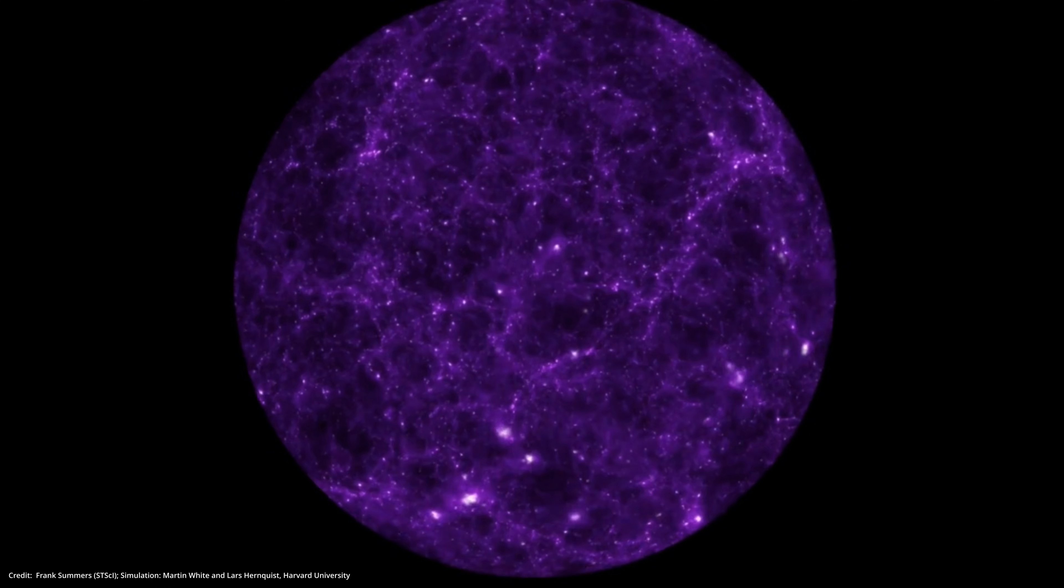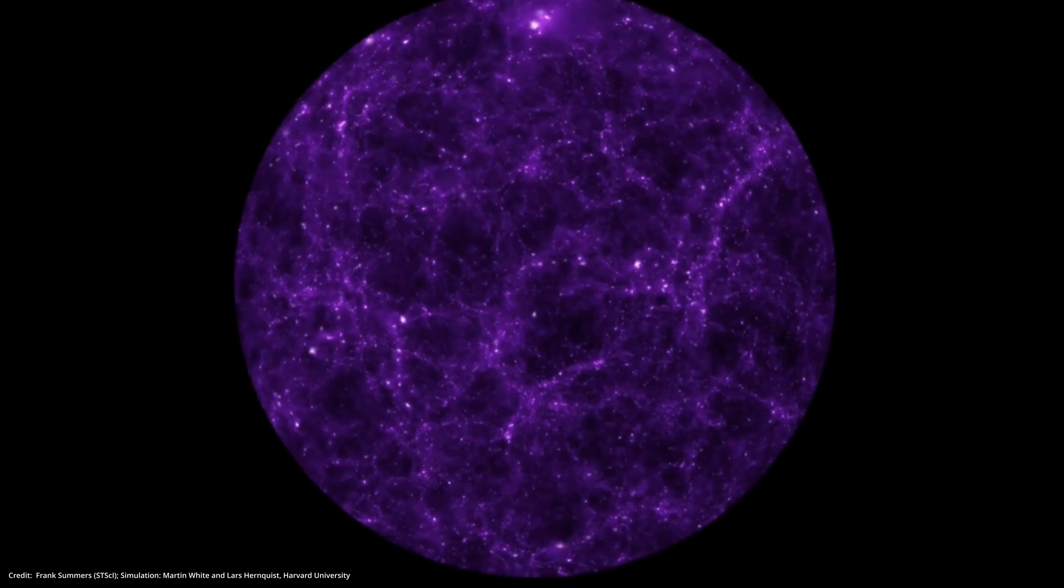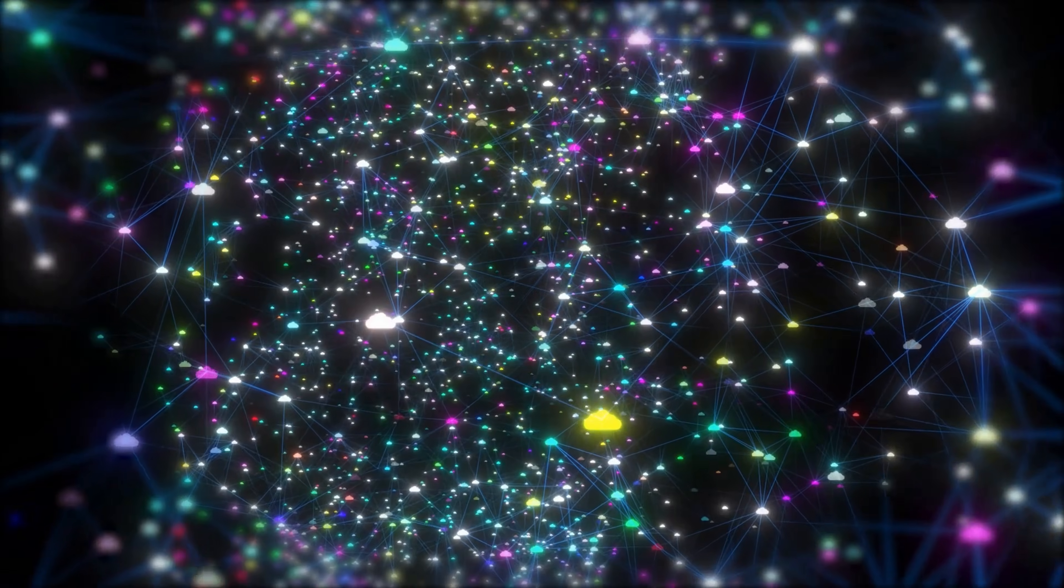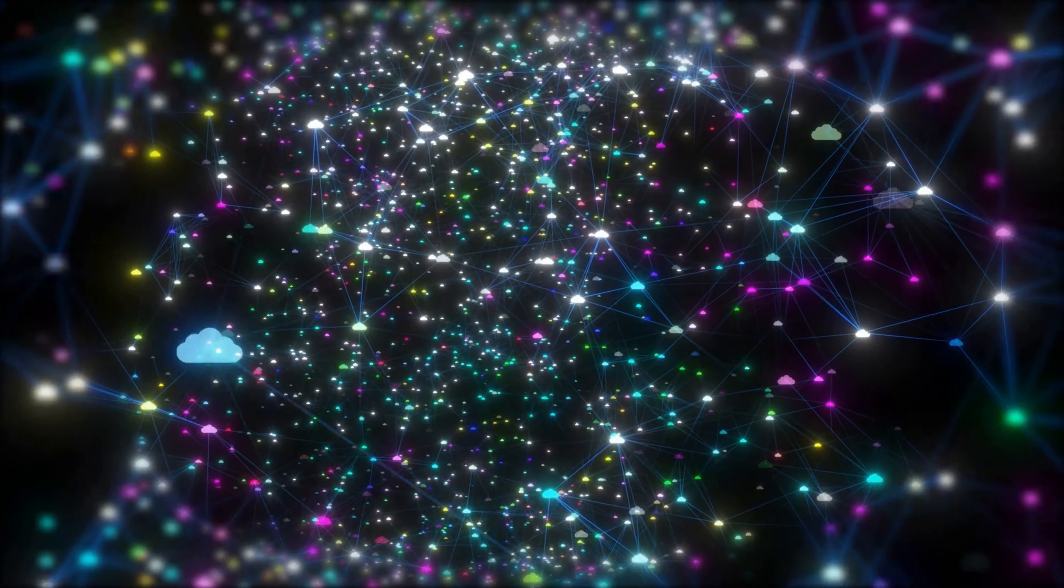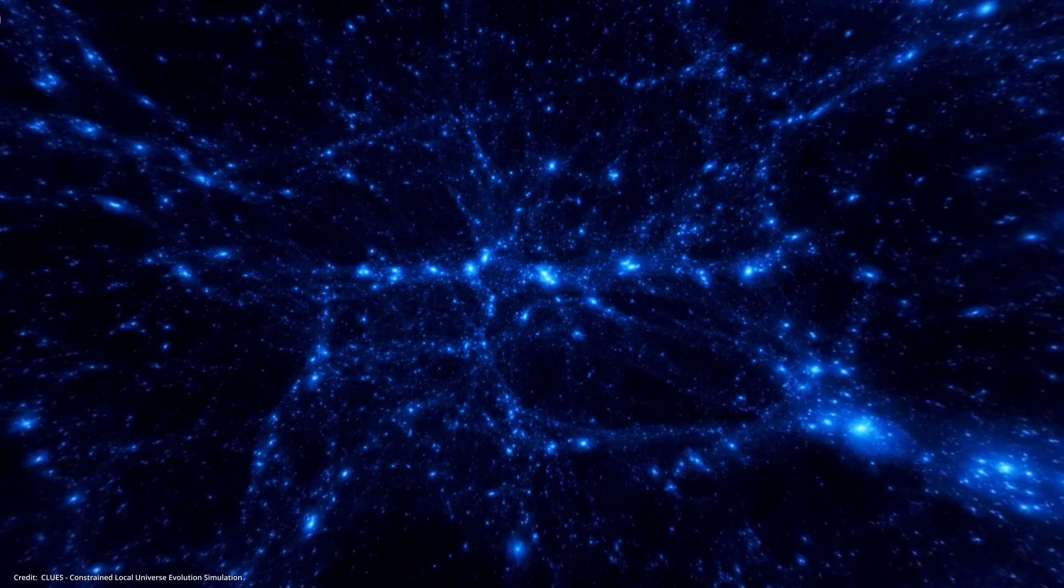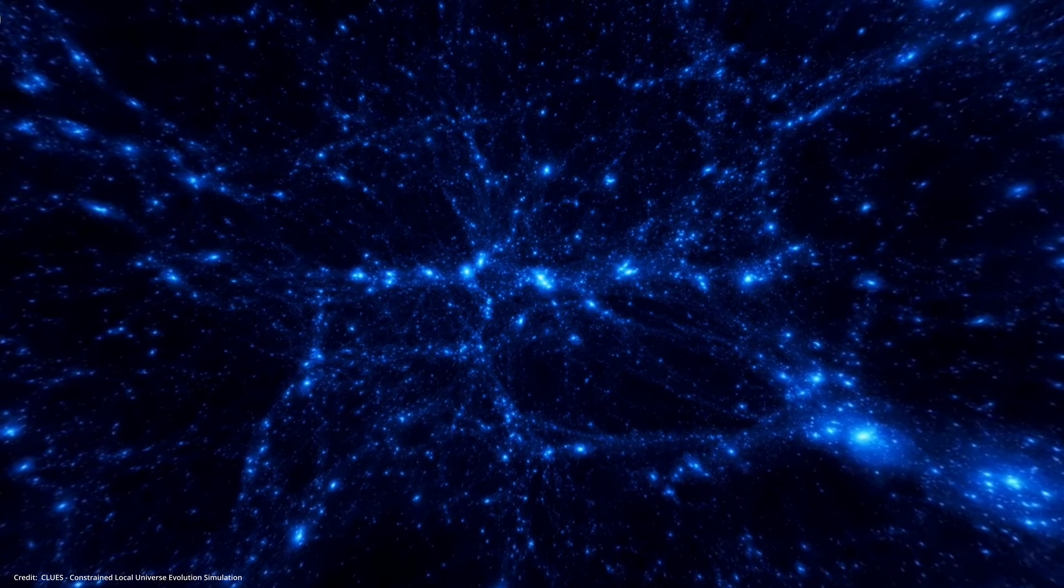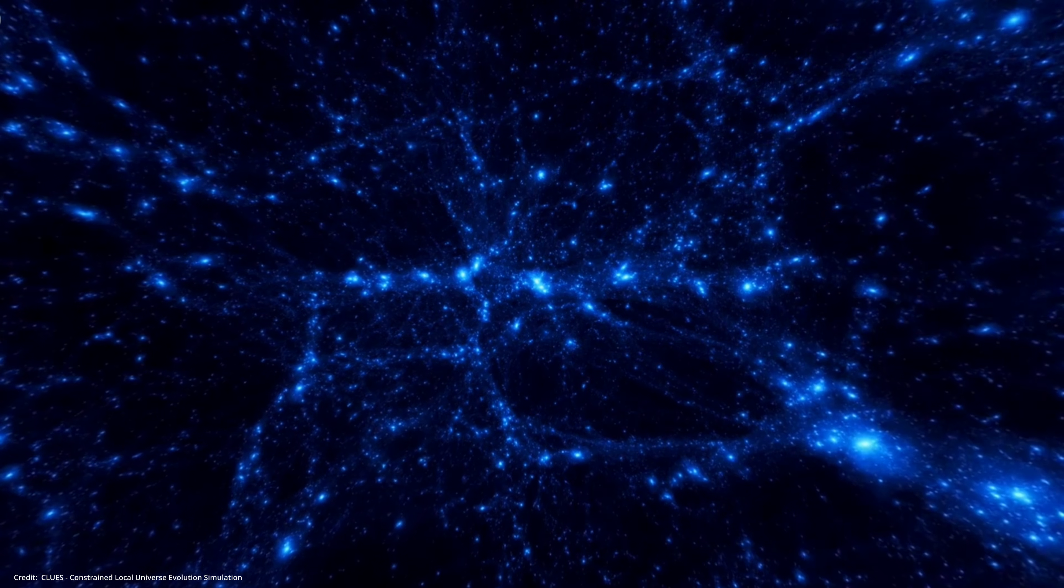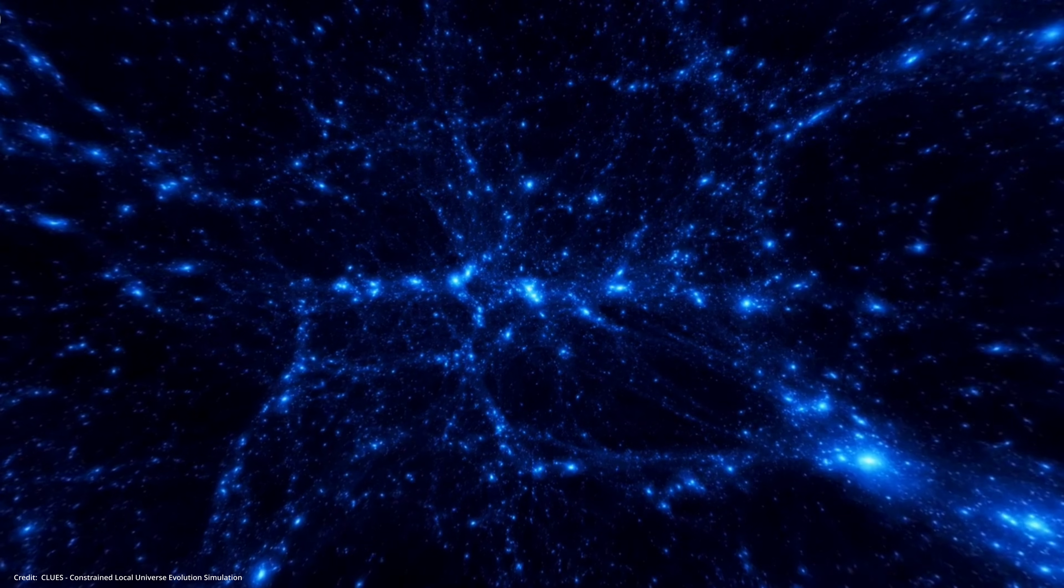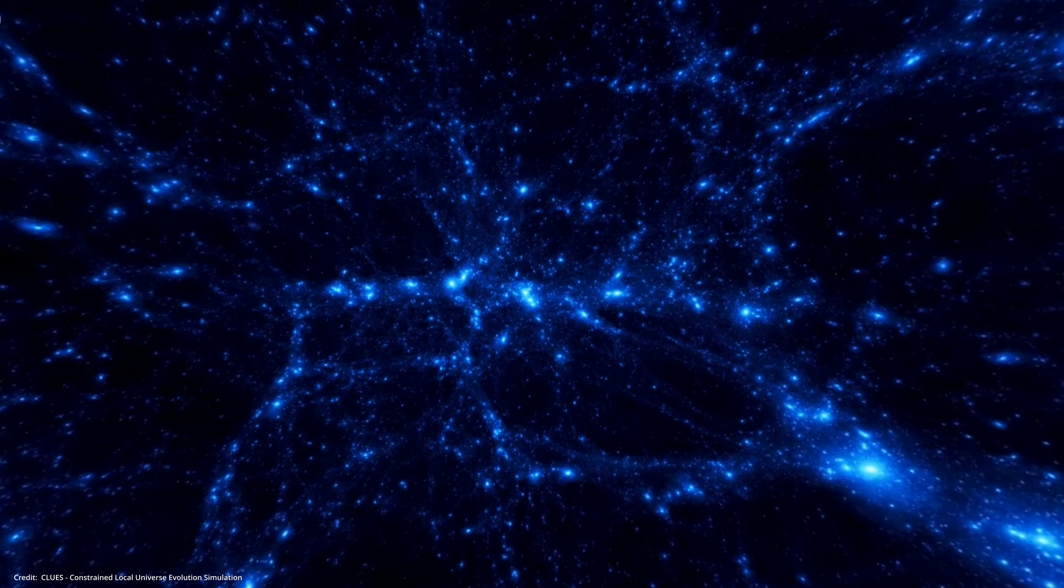The universe has a hidden architecture, a grand design on the largest scales. It's called the cosmic web. It's a colossal, three-dimensional network, a vast tapestry woven across space and time. It's an interconnected structure of filaments, sheets and nodes separated by enormous voids. Think of it like the framework of the universe itself.